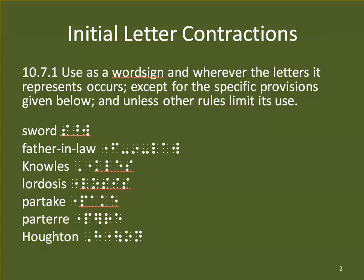Some examples we will see in UEB using initial letter contractions: SORD — the .45W is not the contraction for the word WORD, it is the contraction for the letters W-O-R-D. Father-in-law: 'father' is as it's always been. Notice that IN is standing alone because it has a hyphen before and after it, so we can use the contraction in that hyphenated compound word.